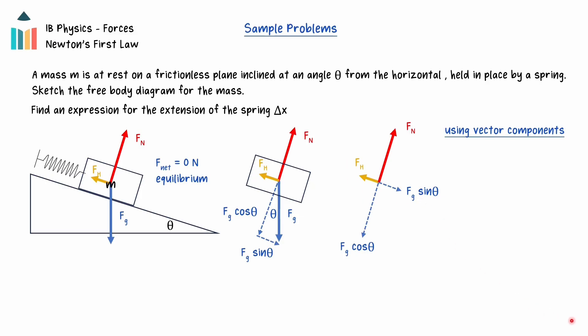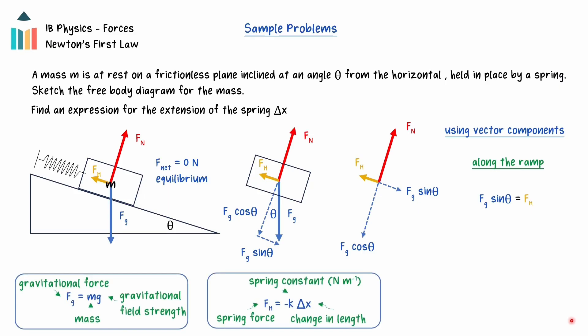And the spring force will be opposite the component of gravity along the plane. So using vector components to solve the problem, we need to consider the forces along the plane. The spring force will be balanced by the component of gravity along the plane. Recall that the gravitational force is equal to the mass times the gravitational field strength. And the spring force is equal to the spring constant times the change in length of the spring. If we sub these relations into our formula and rearrange, we can find that the change in length of the spring will equal the mass times the gravitational field strength times the sine of the angle of the incline with the horizontal, divided by the spring constant.